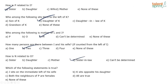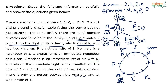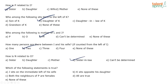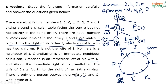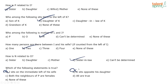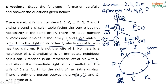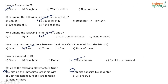Which of the following statements is true? J sits on the immediate left of his wife — that is not true. K sits opposite to his daughter — that is also not true. Both neighbours of P are females — P's neighbours are M and O, both females. That is true. So option C is the correct answer.